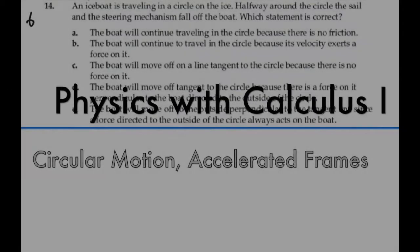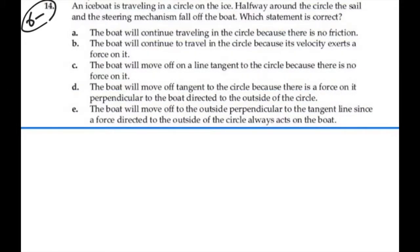This is problem 614. An ice boat traveling in a circle on the ice, halfway around the circle, the sail and the steering mechanism fall off the boat. Which statement is correct?